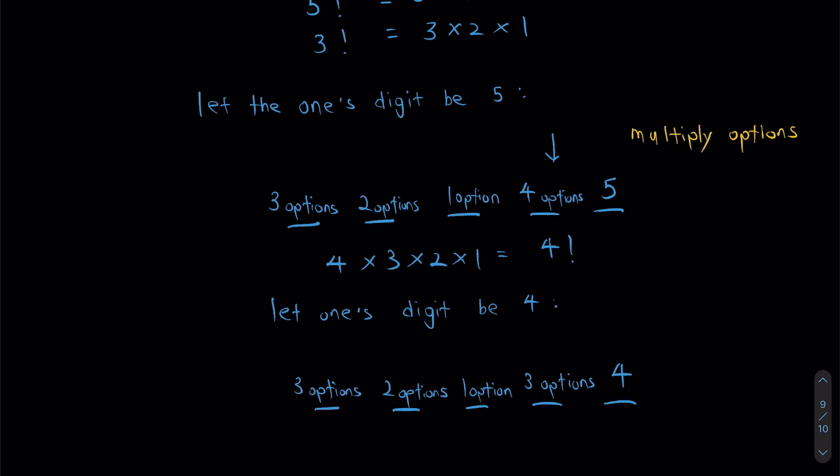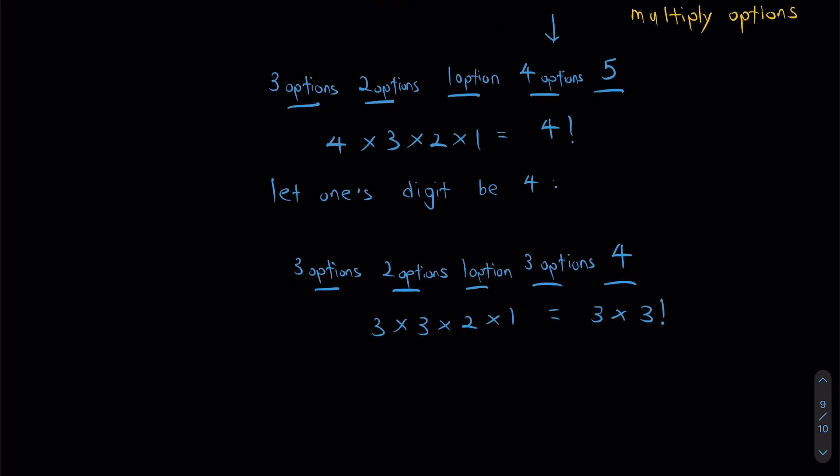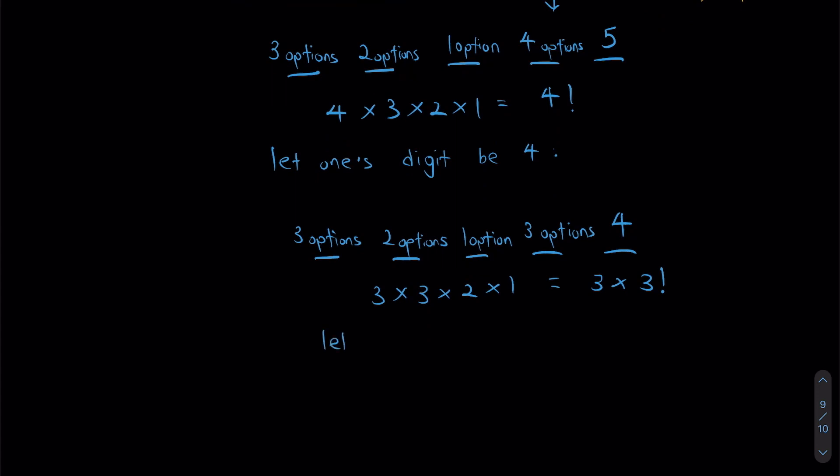more options for here, two more options, and one more option. That's to fill in my remaining three numbers. Those three numbers can be filled in however we want. And once again, what do we need to do? We need to multiply the options. So for this question it'll be 3 × 3 × 2 × 1, or I can rewrite this as 3 × 3 factorial.